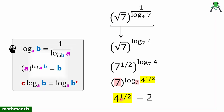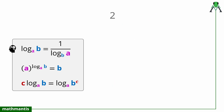Now you understand the thought process behind applying these three important logarithm properties. In any logarithmic expression, if you see a log expression in the exponent, look at its base and the base of the outer exponent, and try to make both values the same — that is how you start solving the problem. This right hand side expression evaluates to 2.